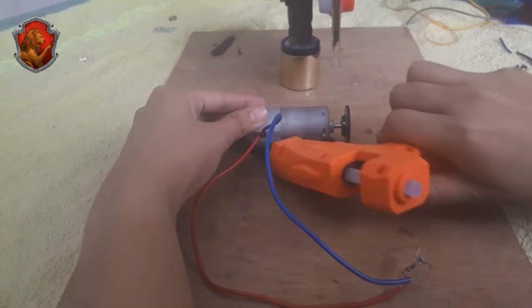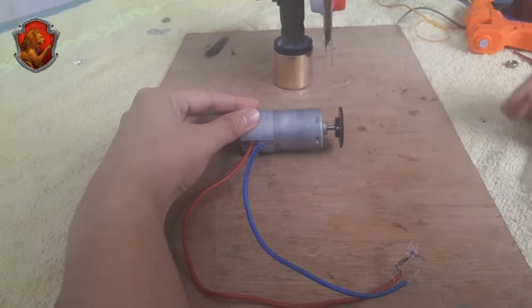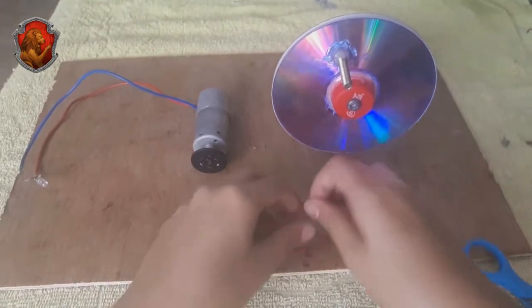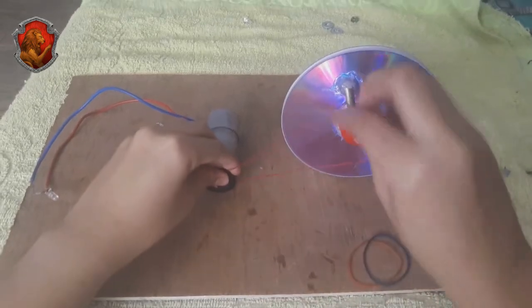Glue your dynamo to your base. And finally, use a rubber band or any string to connect your dynamo to your CD wheel.